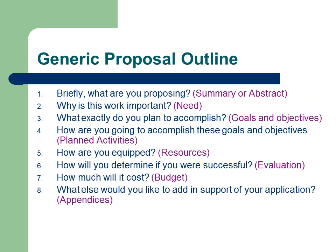A typical proposal outline: What are you proposing? That's your summary or abstract. Why is this work important? That's the need. What exactly are you planning to accomplish? Your goals and objectives. How are you going to accomplish those goals? That's your planned activities and interventions. How are you equipped — what's your capacity? How are you going to determine success? That's the evaluation piece. And how much is it going to cost? That's your budget.